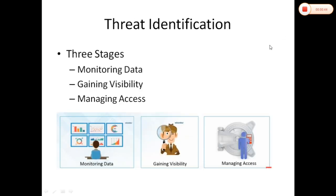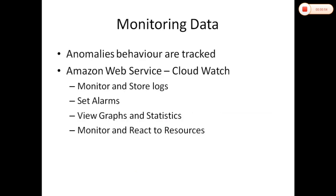Next is threat identification. There are three stages: monitoring data, gaining visibility, and managing access. For monitoring data, anomalous behavior will be tracked. In Amazon Web Services, there is a service called CloudWatch, which allows us to monitor and store data, view real-time data graphs, and run statistical analysis.